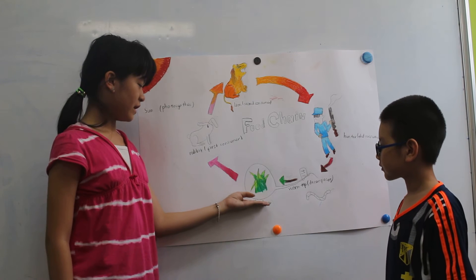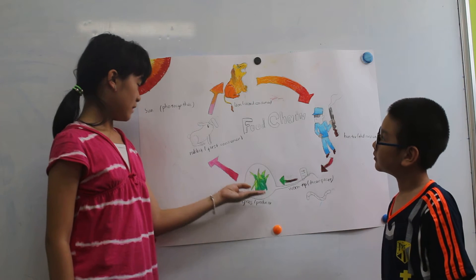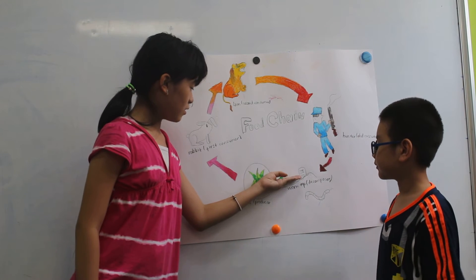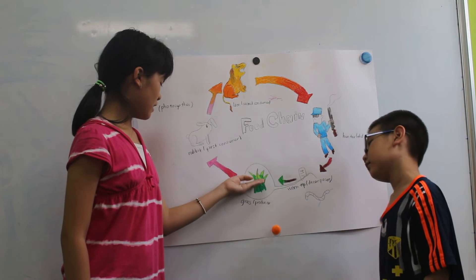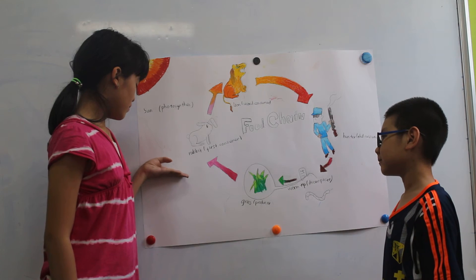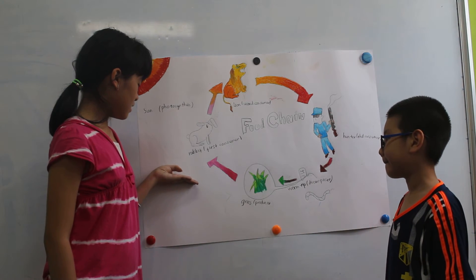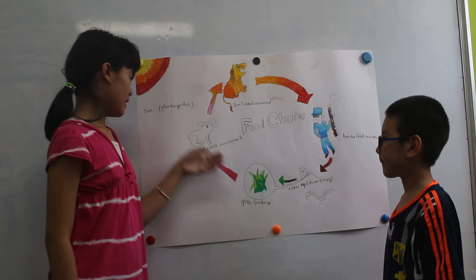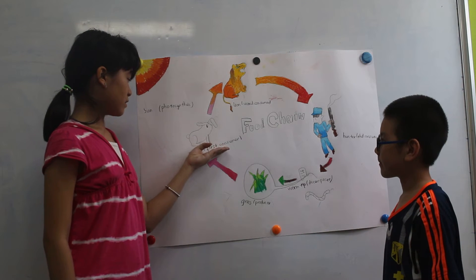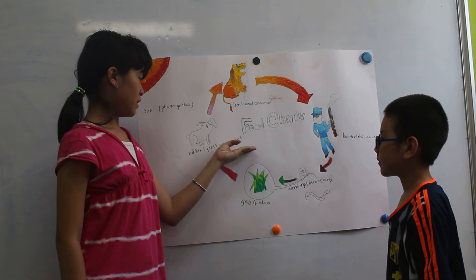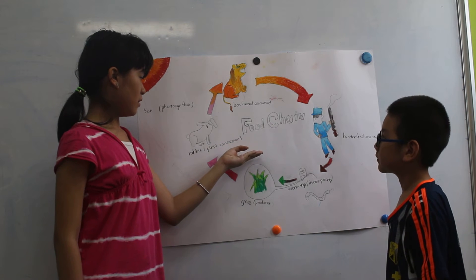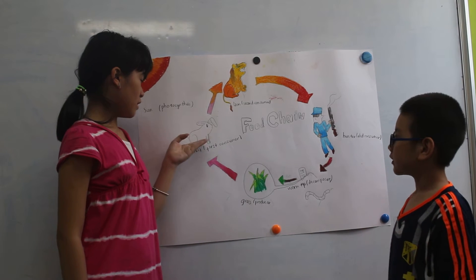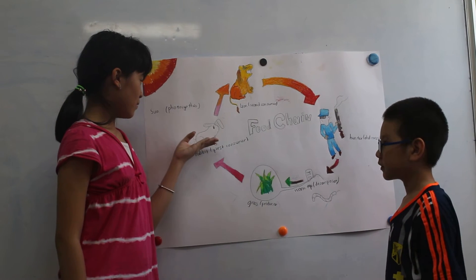The grass is produced. The grass uses photosynthesis to make energy. The rabbit is a first consumer, a herbivore. The herbivore eats the grass for energy.